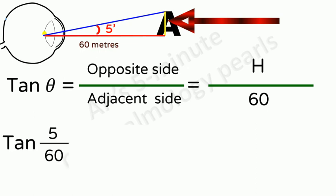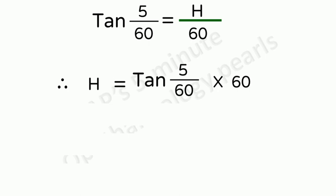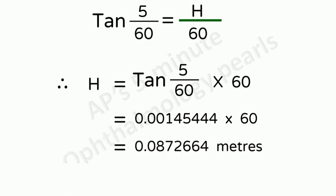So, now tan theta that is tan of 5 minutes or if we convert it to degrees 5 by 60 degrees is equal to height by 60. So, height is equal to tan of 5 by 60 into 60. Tan of 5 by 60 is 0.00145444. Multiply that by 60 that gives us 0.087264 meters.